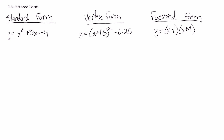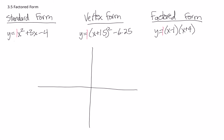Today we're going to do one more form of a quadratic equation — factored form. We'll look at each of the three forms and see the pros and cons. First, we see there's a one out front in each equation, meaning the parabola opens upward and is normal width — not skinny or wide. In standard form, the negative four tells us the y-intercept is at (0, -4), and that's all standard form gives us.